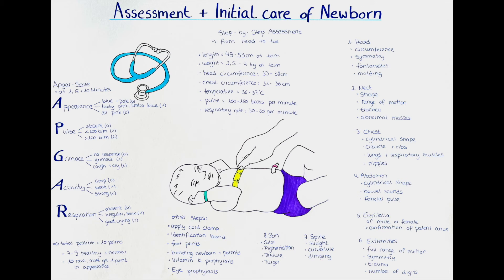The chest inspection begins with its shape — it should be cylindrical. A more bell-shaped form can be a sign of underdeveloped lungs. We also check the position and integrity of the clavicles and ribs, which may have been damaged during birth. We observe the movement of the respiratory muscles and auscultate the lungs and heart, checking for abnormal sounds such as murmurs.